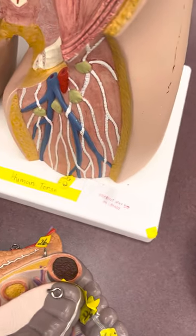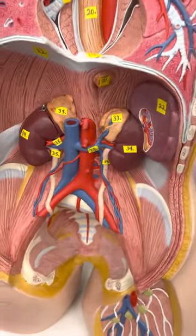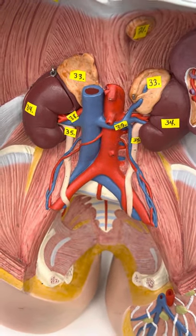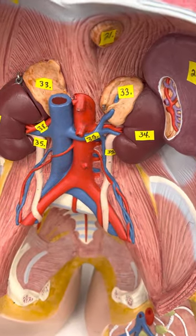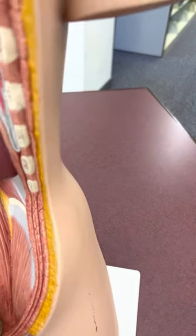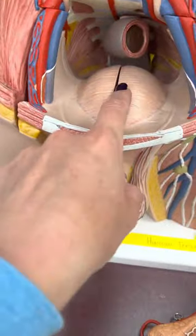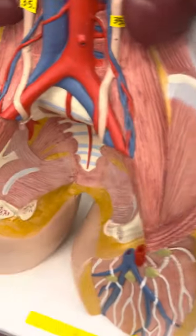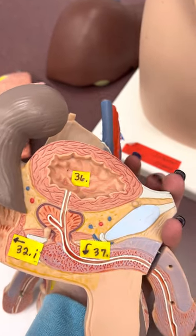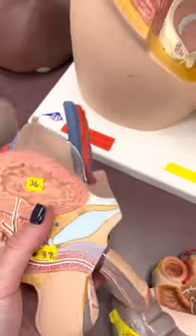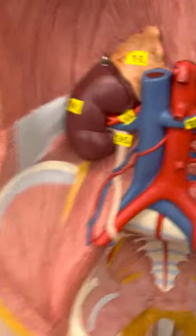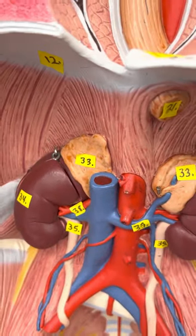Moving on to the urinary system. Number 33 is the adrenal glands, sitting right on top of the kidneys. Coming out of each side of the kidney are number 35, the ureters, flowing into the urinary bladder — number 36, labeled on the inside. Number 37 coming out of the bladder is the urethra. And lastly, we have the renal artery and the renal vein.